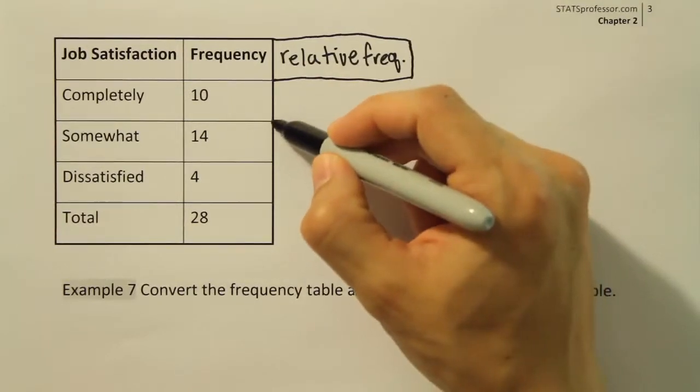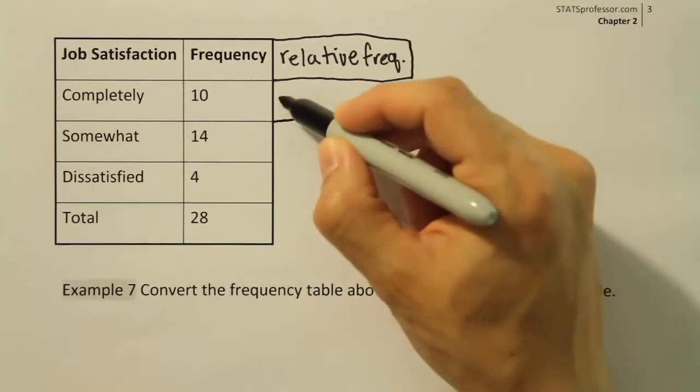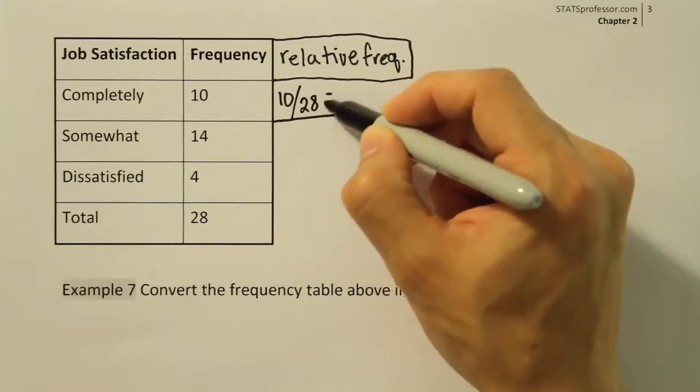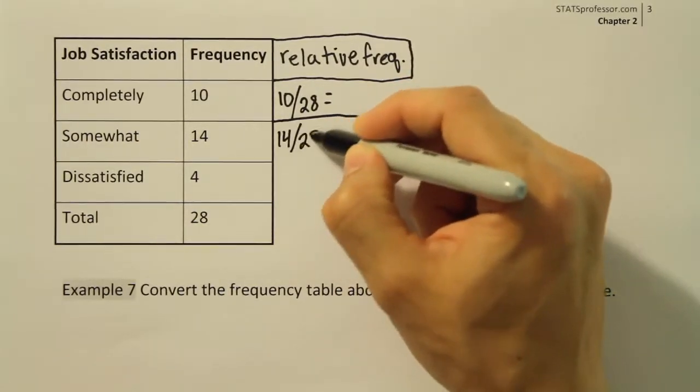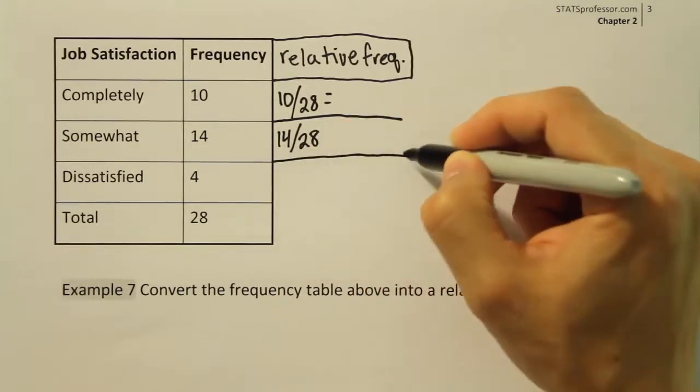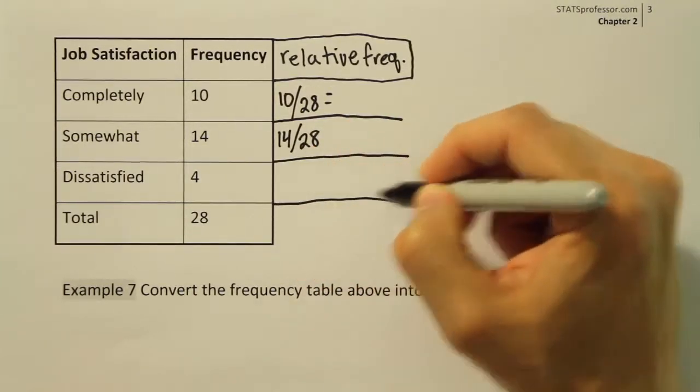So for the first class, we're going to take that 10, we're going to divide it by 28, and that will give us the relative frequency. And then we'll do 14 divided by 28, and then we'll do 4 divided by 28.